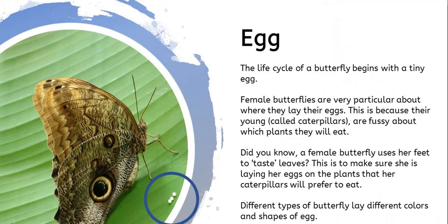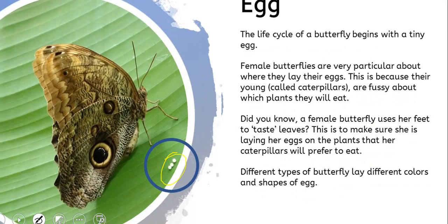The life cycle of a butterfly, just like most insects, starts with an egg. The egg is really tiny — you can see the tiny little egg here, and compared to the butterfly, they are super tiny. Female butterflies are particular about where they lay their eggs, because baby caterpillars are very fussy eaters. They won't eat just any leaf — they will only eat special leaves. So the female butterfly actually uses her feet to taste the leaves, to make sure it is something that the caterpillars will eat after they hatch from the eggs.